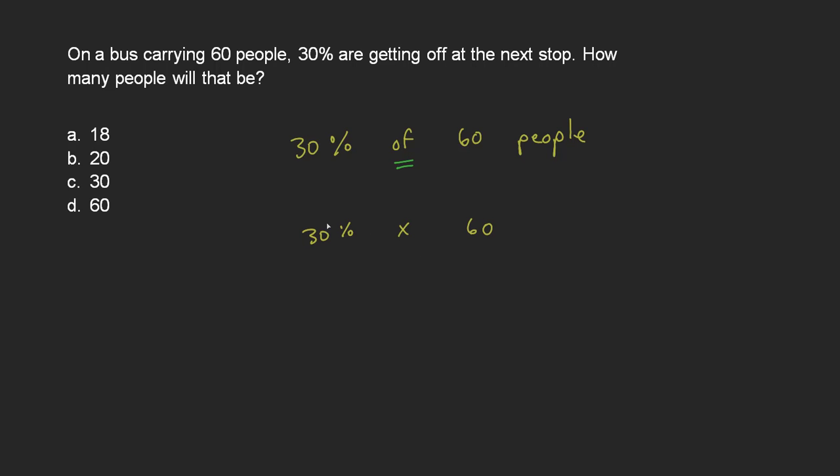Now, if you have a calculator that allows you to type in percentages, you could literally just type in 30 and then a percent sign, multiply that by 60, and you get your answer. The answer is going to be A, 18.